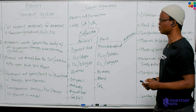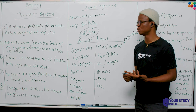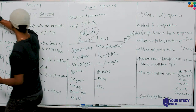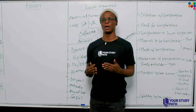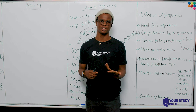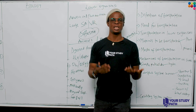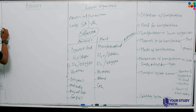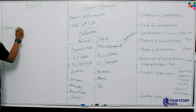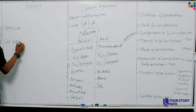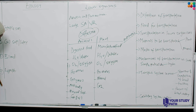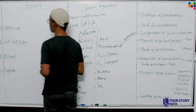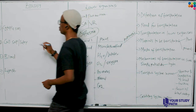The next thing we look at is media of transportation. There are four media of transportation. Number one: cytoplasm. Number two: cell sap or latex. Number three: blood. Number four: lymph. These are the four major media of transportation in an organism.